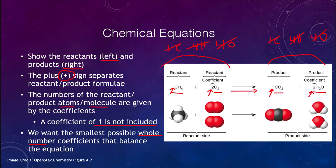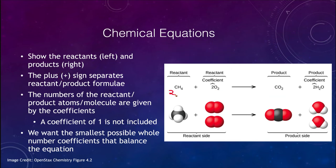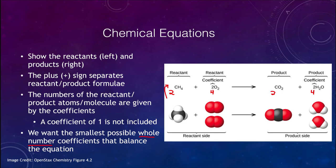You could also balance this equation other ways. For example, you could write 2CH4 plus 4O2 yields 2CO2 plus 4H2O. This is balanced, but it is not balanced with the smallest possible whole number coefficients, because each of these is divisible by two and can be reduced to the equation discussed previously. So while you might end up with something that is balanced, it may not be correctly balanced if you are not using the smallest whole number coefficients.